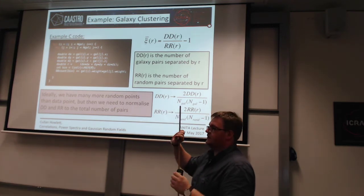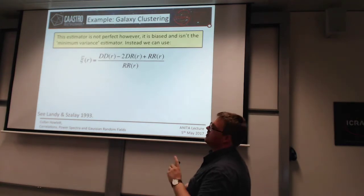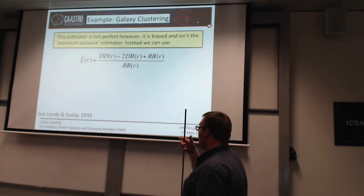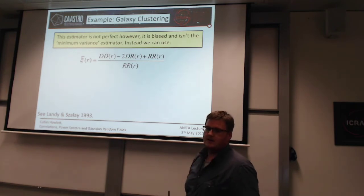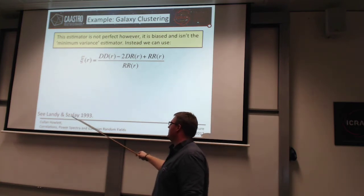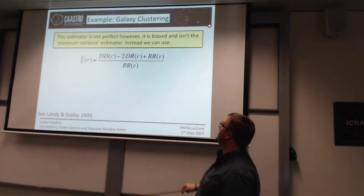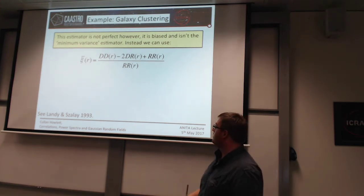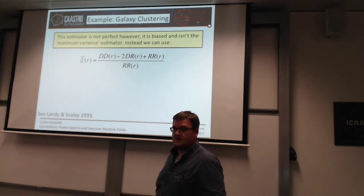However, this estimator — derived just by thinking about how things are distributed in tiny volumes — is not perfect. It's both biased and not the minimum variance estimator. This paper from 1993, in the context of galaxy clustering, came up with a better estimator — the Landy-Szalay estimator — which has much better variance properties than the previous one.